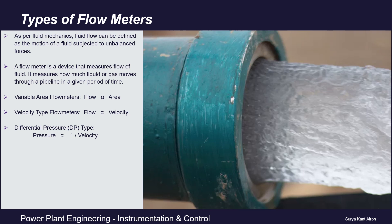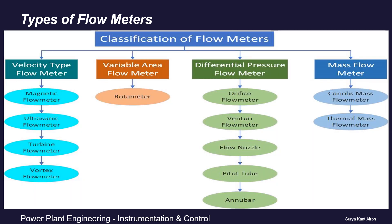Moreover, as pressure increases, velocity decreases — pressure and velocity are inversely proportional, which implies flow is also inversely proportional to pressure. This principle is widely used in power plant industries for flow measurement. Examples are differential pressure type flow meters, flow nozzles, etc. Based on these principles, flow meters can be broadly classified as velocity type, variable area type, differential pressure type, and mass flow meters.